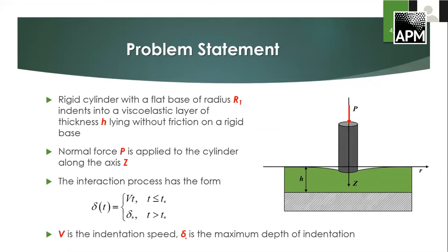The interaction of a rigid cylinder with a flat base of given radius with a viscoelastic layer of thickness h, rigid on a rigid base without friction, is considered. A normal force P is applied to the cylinder along axis z. The process of interaction has two stages: the first stage is the loading stage with constant speed, and the second stage is the holding at a definite depth.